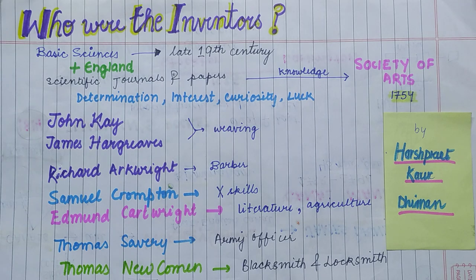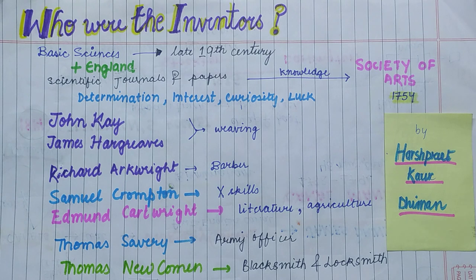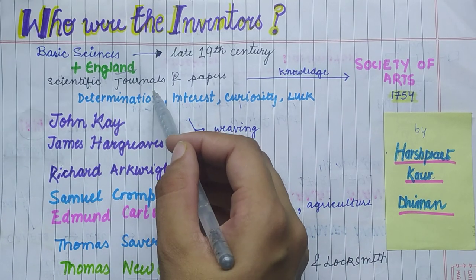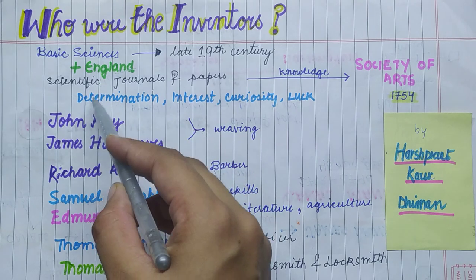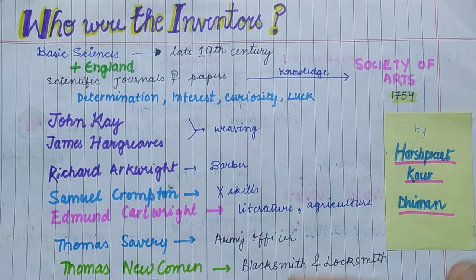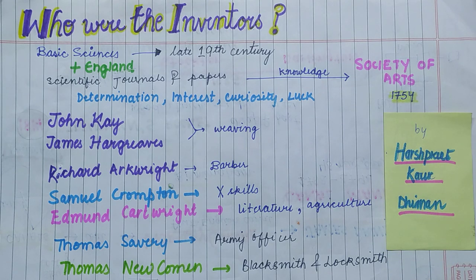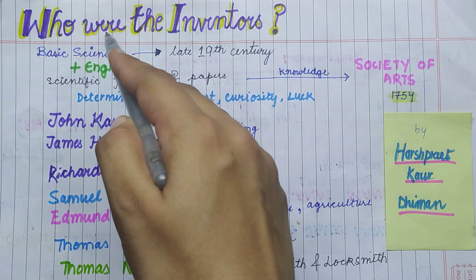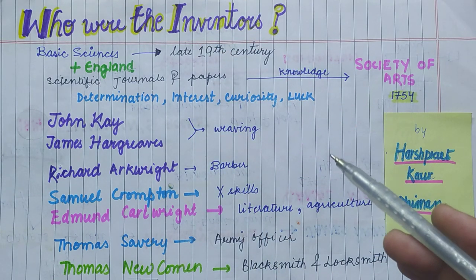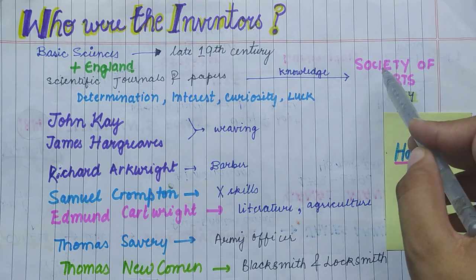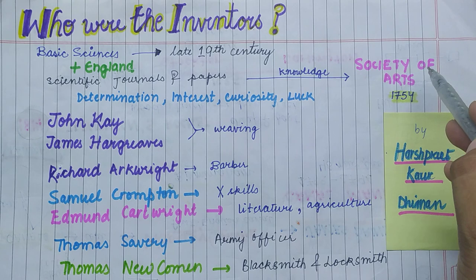In England there were many factors working that were not present in other European countries. For example, because of the agricultural revolution which we studied in the first video, many people were freed from farming. The scientific knowledge started to increase in the early 19th century and was transmitted through different institutions, one of which was established in 1754.